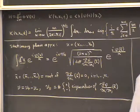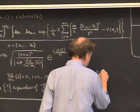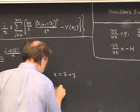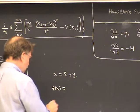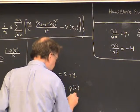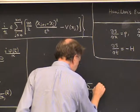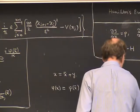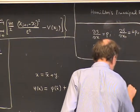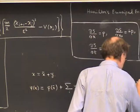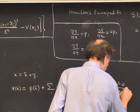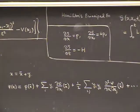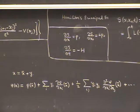Let's take an arbitrary point x and write it as a stationary phase point plus a correction we'll call y. Then we expand the phase phi of x in powers of y, which we're thinking of as small. So it becomes phi of x-bar, plus the first correction which is the sum over i of y_i times the partial of phi with respect to x_i evaluated at x-bar, plus the second correction — a multidimensional Taylor series — which is the sum over i,j of y_i times y_j times the second derivative of phi with respect to x_i x_j evaluated at x-bar. Then there are cubic and higher terms which we don't write down.